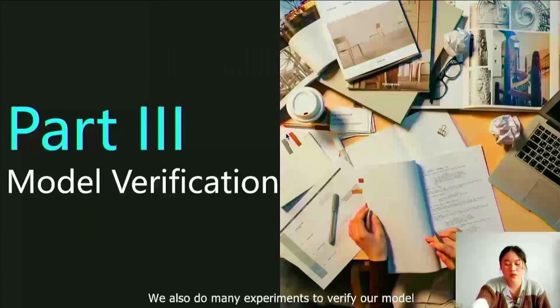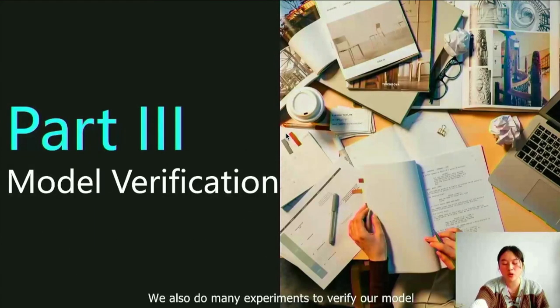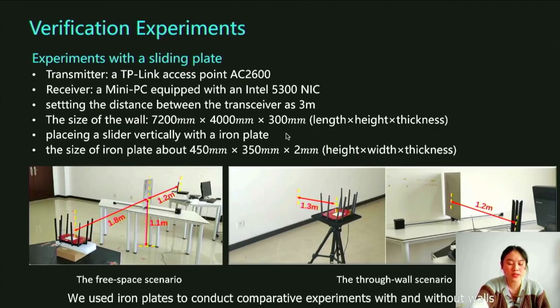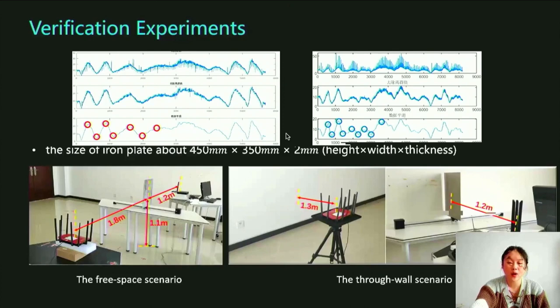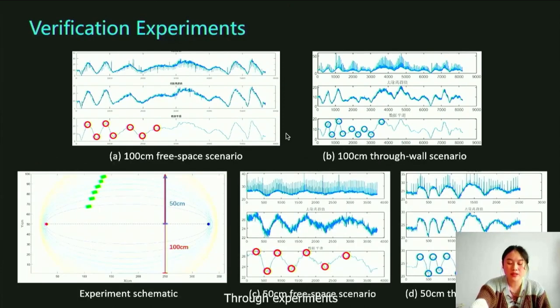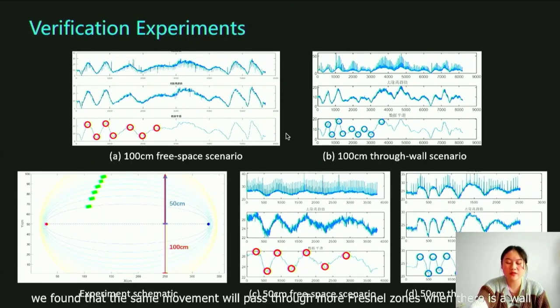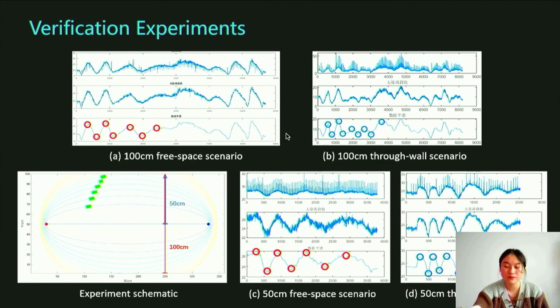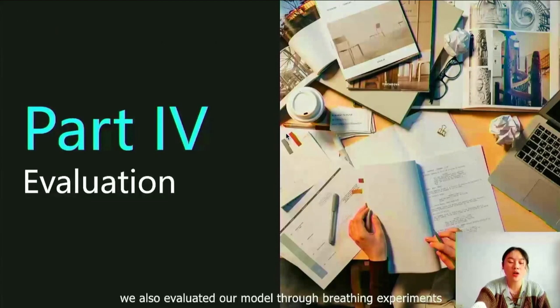We also did many experiments to verify our model. First, we used iron plates to conduct comparative experiments with and without walls according to the following configuration. Through experiments, we found that the same movement will pass through more Fresnel zones when there is a wall.